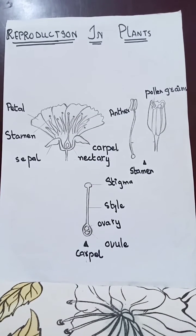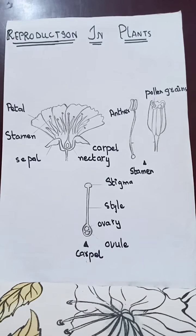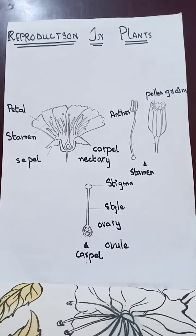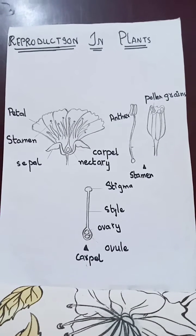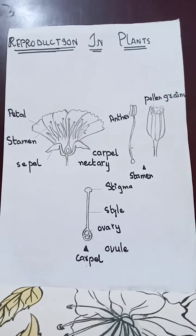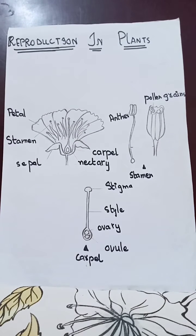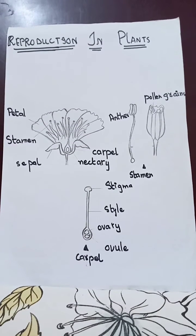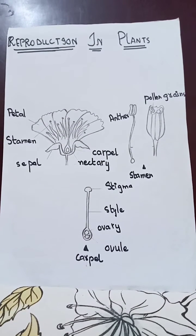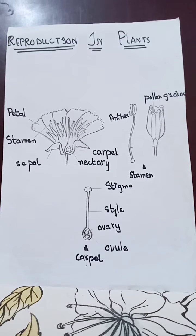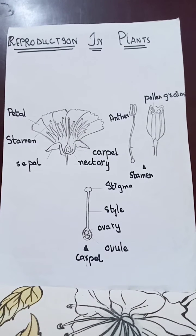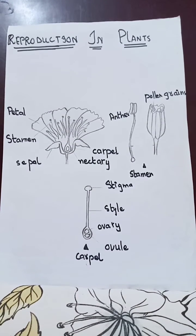The male reproductive organs are called stamens. These produce the male reproductive cells or gametes contained in pollen grains. The female reproductive organs are called carpels and they produce gametes called ovules inside an ovary.